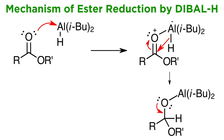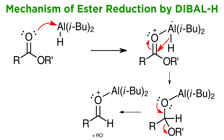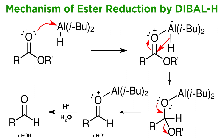Then a lone pair from oxygen reforms the carbonyl to kick off the alkoxy group. Aqueous acidic workup then protonates the alkoxide to give the alcohol byproduct, and performs hydrolysis on the aluminum complex over several steps, such that we are left with our aldehyde. And the transformation is complete.